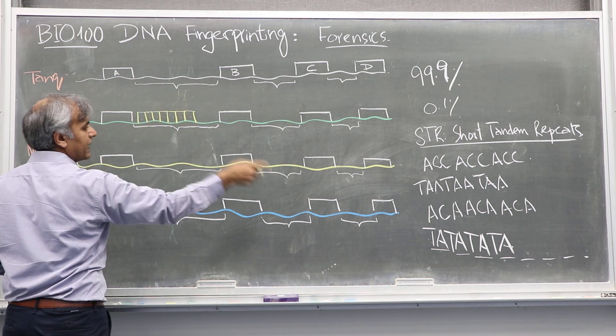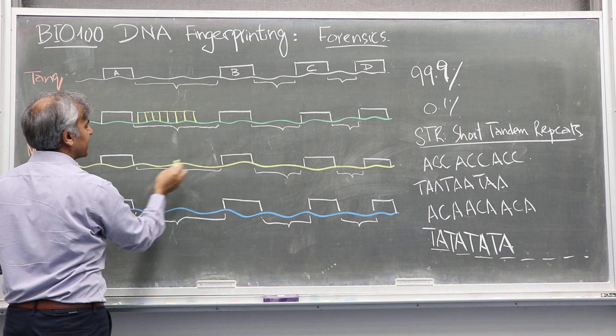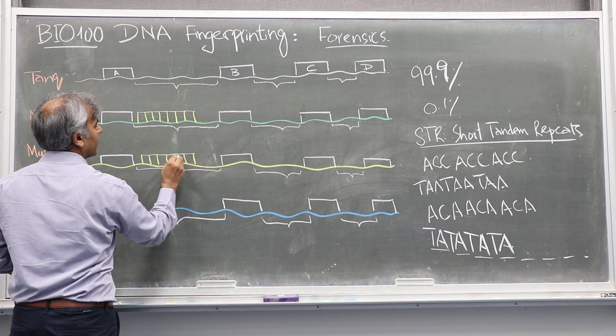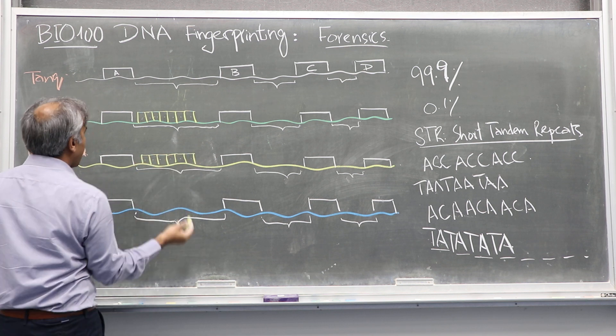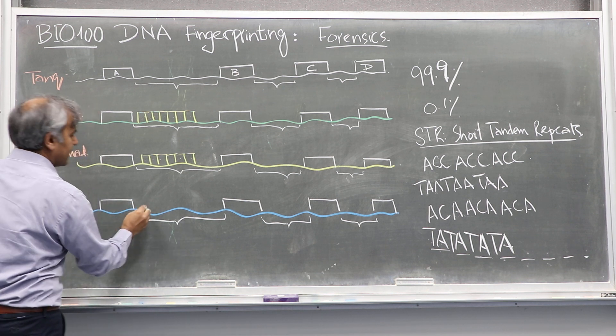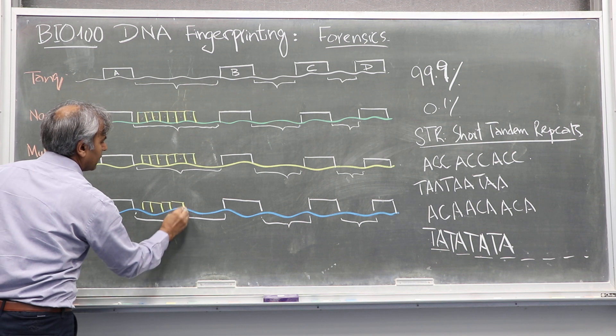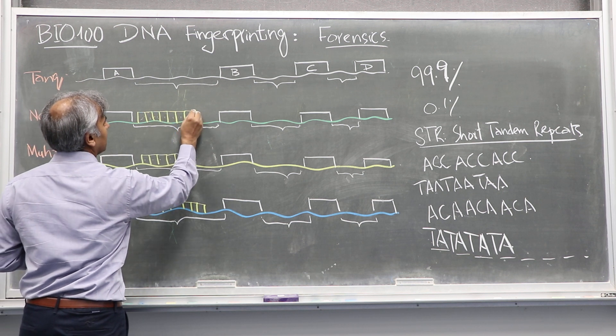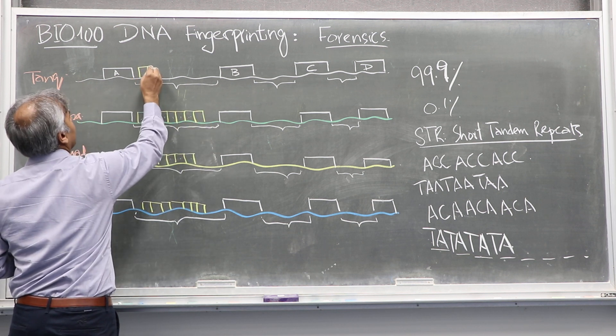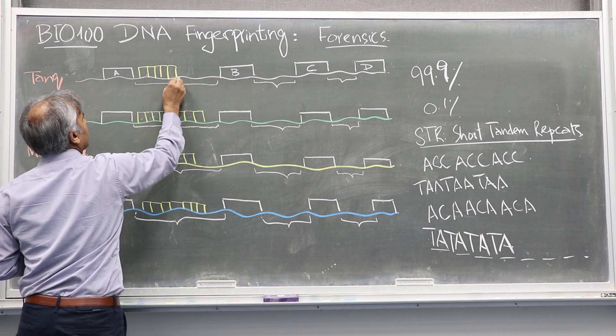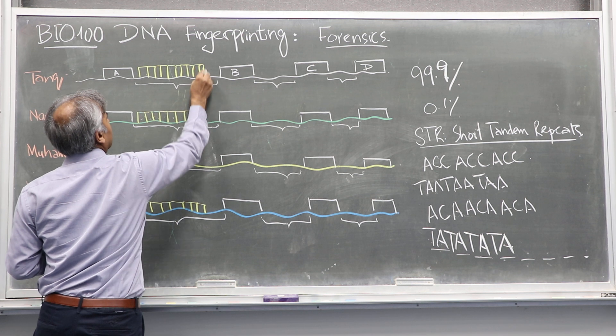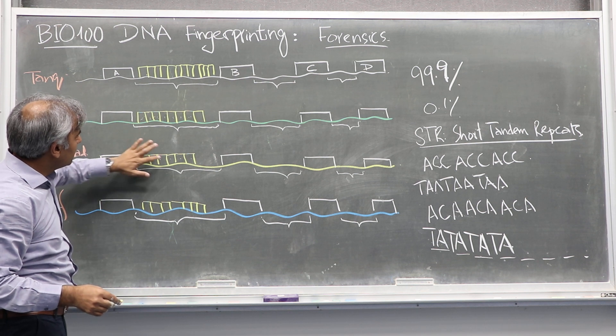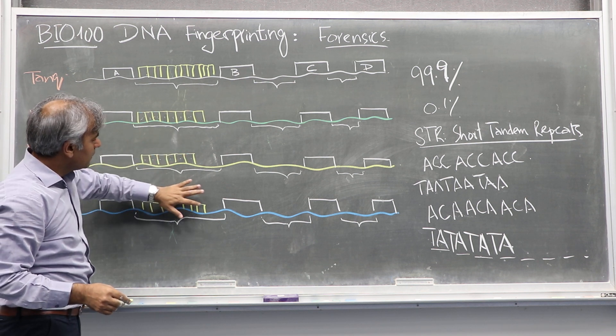For example, 8 repeats times 7 equals 56 nucleotides. Whereas another individual has 6 repeats. Yusuf has 7. Let's say here is 8. Then imagine I have 12. So 12, 8, 6, 7. Now, these are the fingerprints.